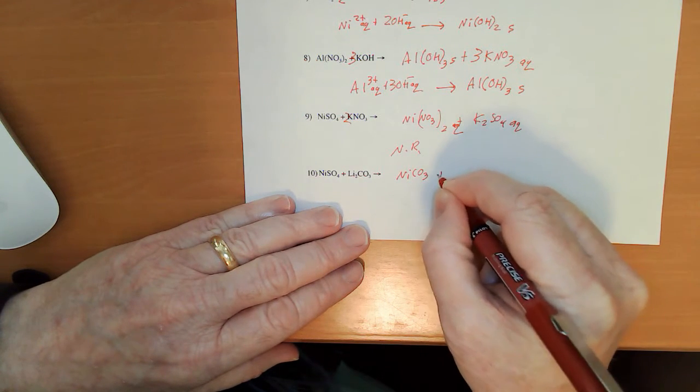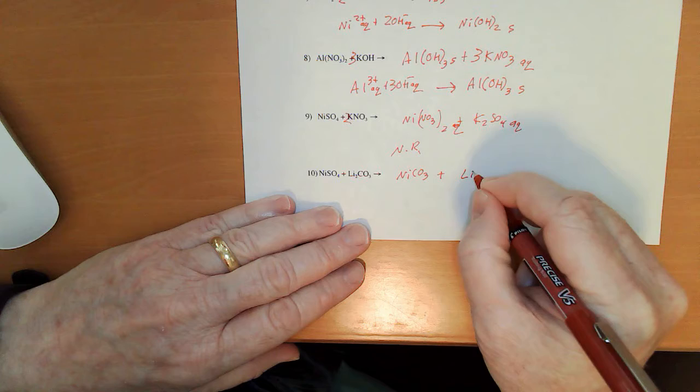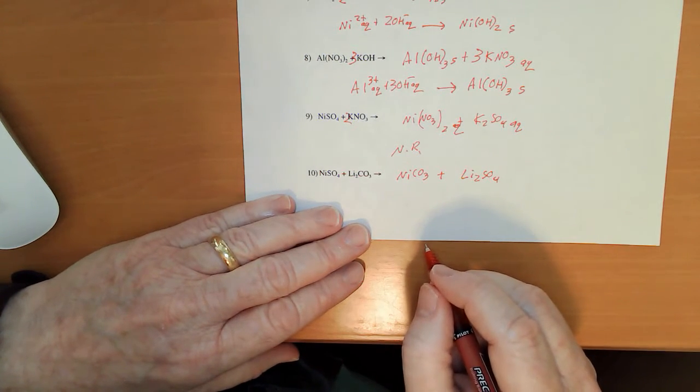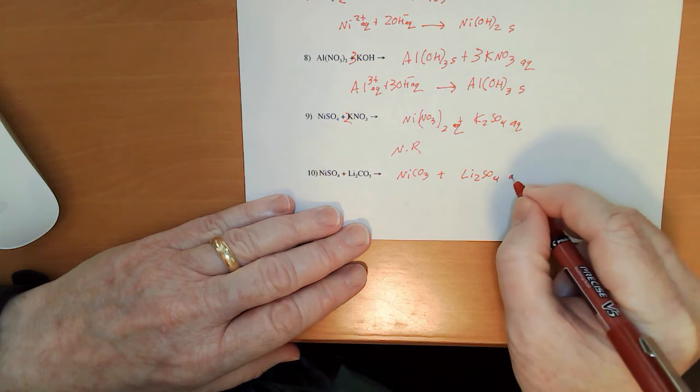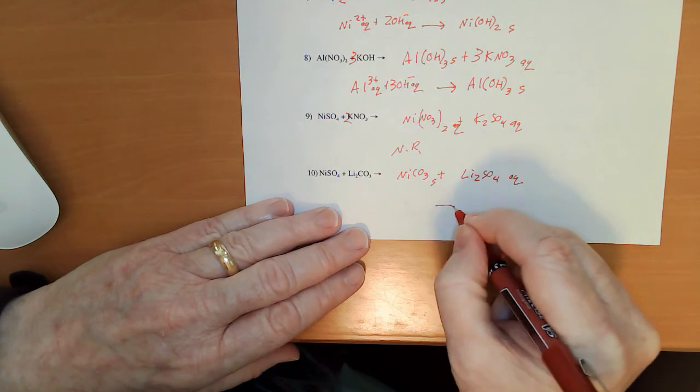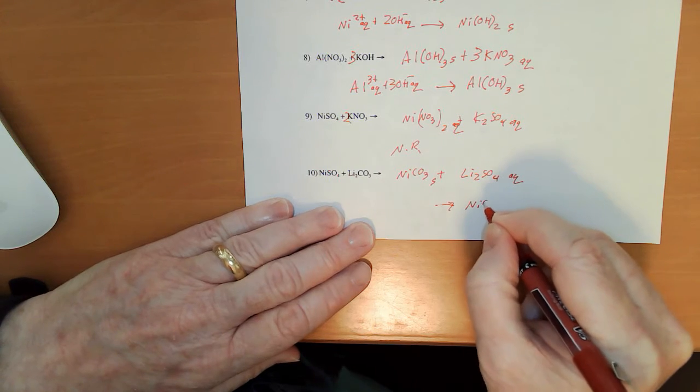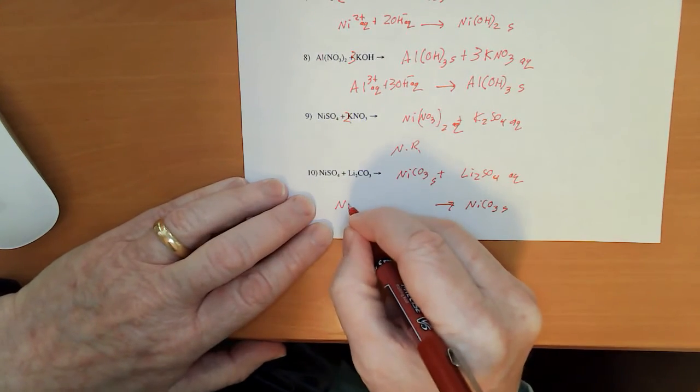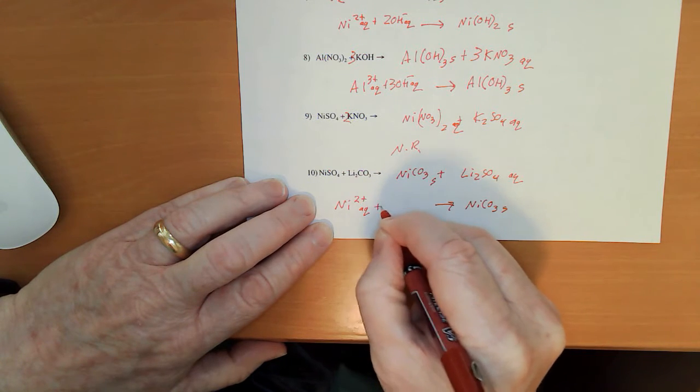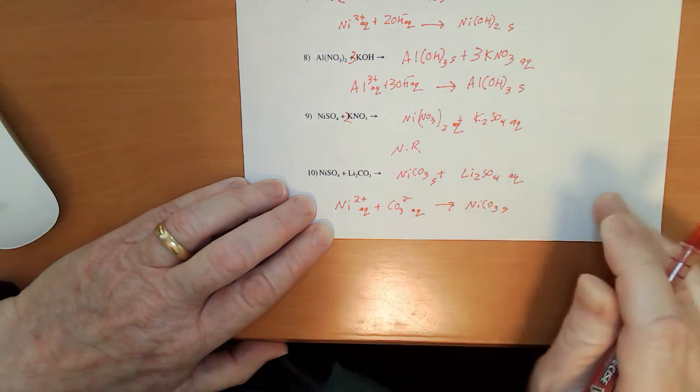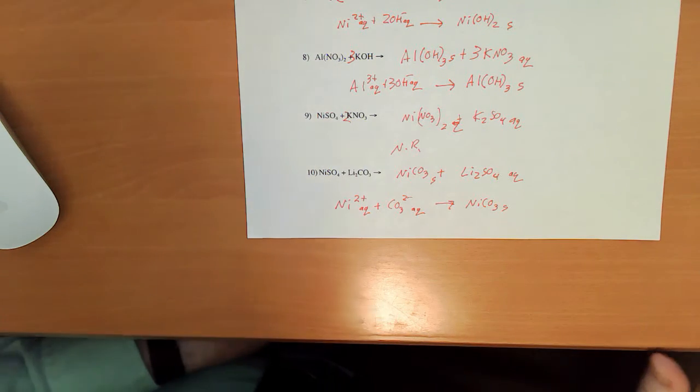Nickel carbonate and lithium sulfate. So, lithium, so that's aqueous. Nickel carbonate, that'll precipitate. So, NiCO3 solid. That's going to be a nickel 2 plus aqueous and a CO3 2 minus aqueous.